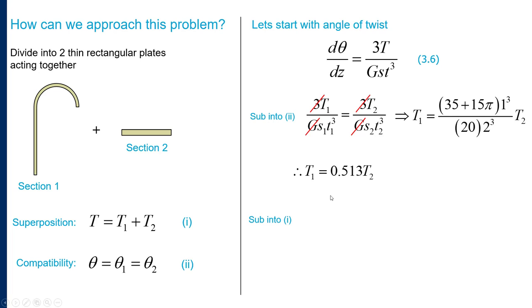I can now substitute this result into equation I to get an expression of T2 in terms of our total torque. So 5 newton meters equals 0.513·T2 plus T2, so T2 becomes 5 divided by 1.513. I will then get T2 is 3.3 newton meters, therefore T1 is 5 minus 3.3 or 1.7 newton meters.